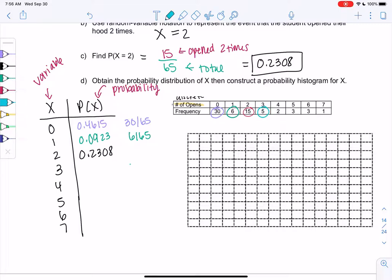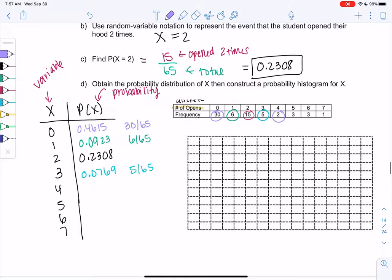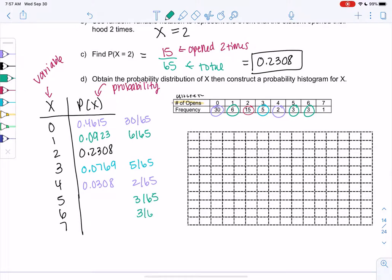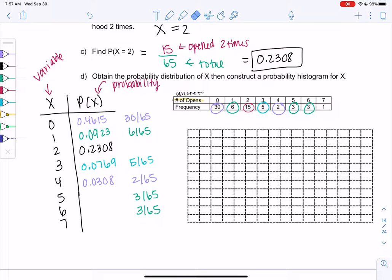So then for 3, we'll do 5 out of 65. Notice I'm doing the frequency, not the number. So 3 has nothing to do with probability. 5 students open 3 times out of 65. So 0.0769. For 4, we get 2 out of 65. So 2 students out of the 65. 0.0308. For 5 and 6, they're actually both 3 out of 65. So I'm going to save myself the trouble and only do it once. Just write the same number twice. 0.0462. And then the final one will be 1 out of 65 for 7, which is 0.0154.